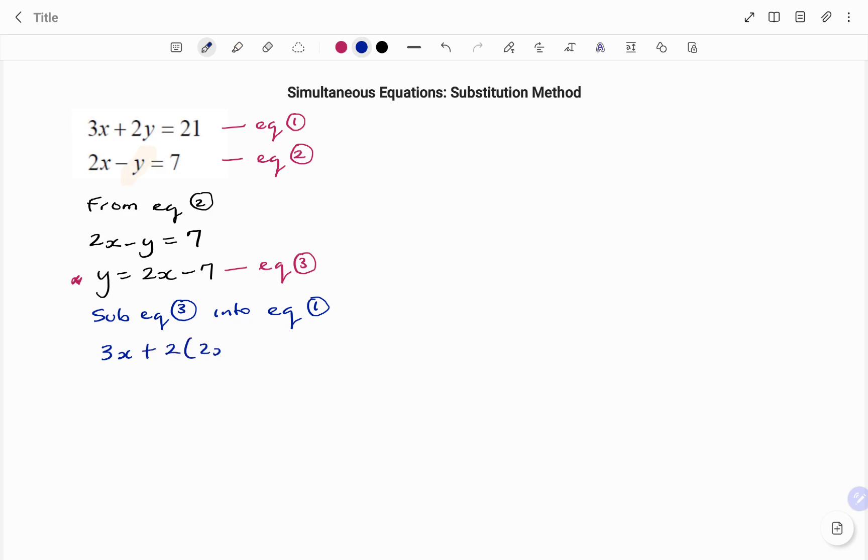I have 3x plus 2(2x minus 7) equals 21. If I expand the bracket, I have 3x plus 4x minus 14. The 2 in front of the bracket will multiply all the terms in the bracket. Collecting like terms, I have 7x minus 14 equals 21. If I move my 14, I have 7x equals 21 plus 14. That will give me 35.